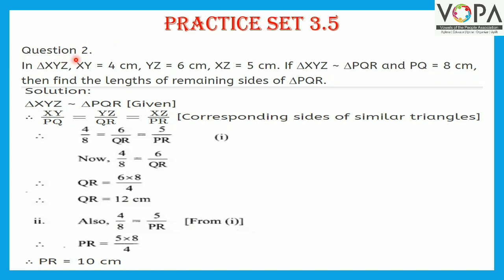Question 2: In triangle XYZ, XY is equal to 4 cm, YZ is equal to 6 cm, and XZ is equal to 5 cm. If triangle XYZ is similar to triangle PQR and PQ is equal to 8 cm, then find the lengths of the remaining sides of triangle PQR.